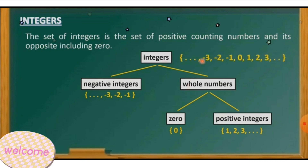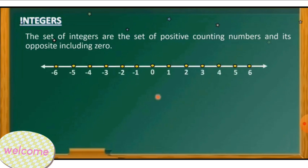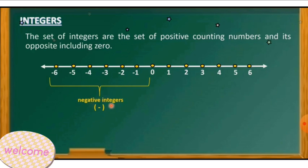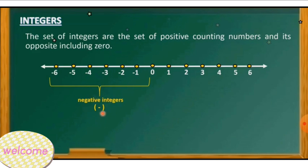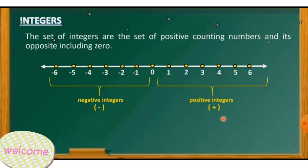So when you say integers, we have the negative numbers including zero and all the positive numbers. The set of integers is the set of positive counting numbers and its opposite, including zero. On the number line, from zero going to the left are the negative integers, denoted by the negative sign. From zero going to the right are the positive integers, denoted by the plus sign. But when we write positive integers, we don't need to write the plus symbol because it is understood.